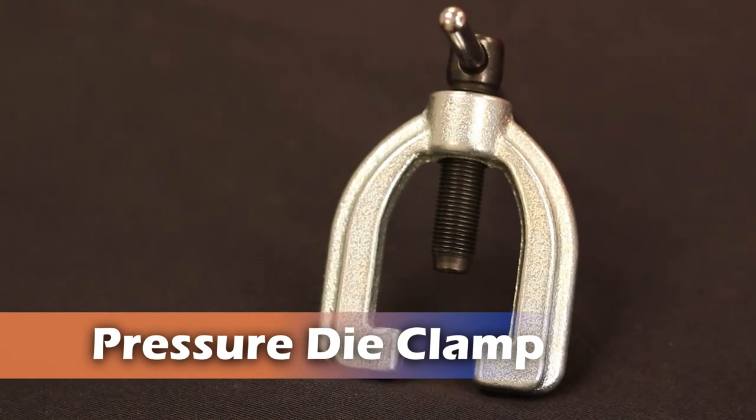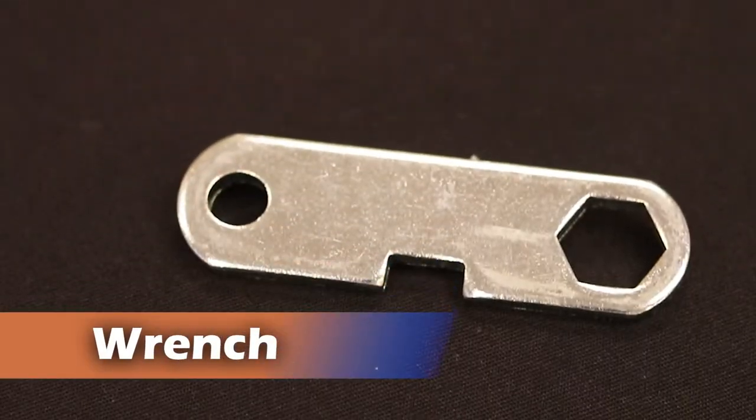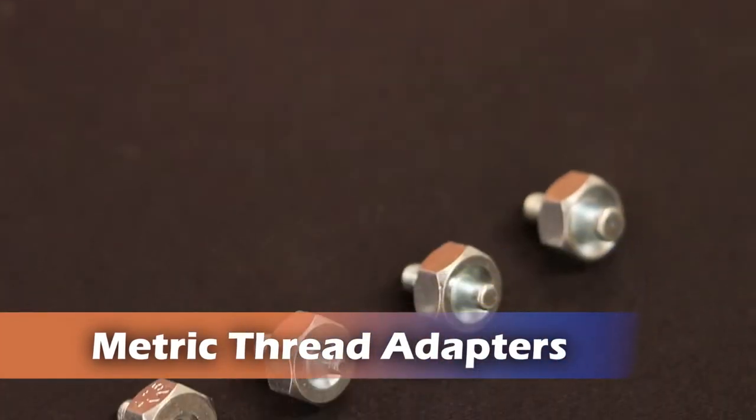This kit contains one pressure die clamp, one die block, one wrench, and four metric thread adapters.